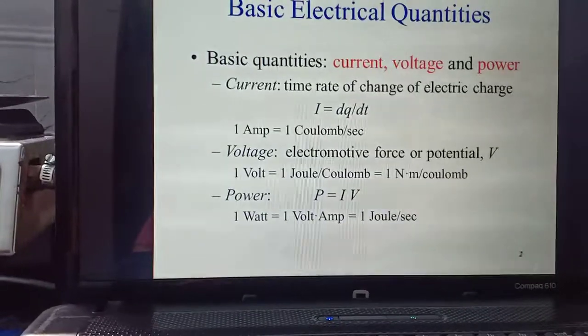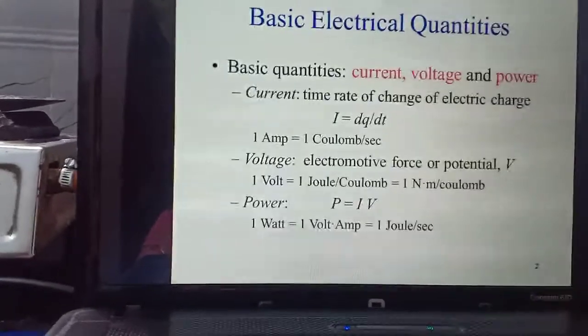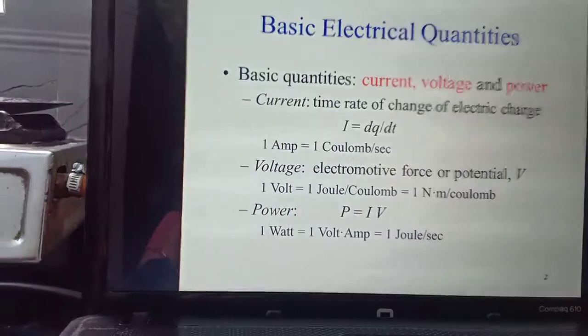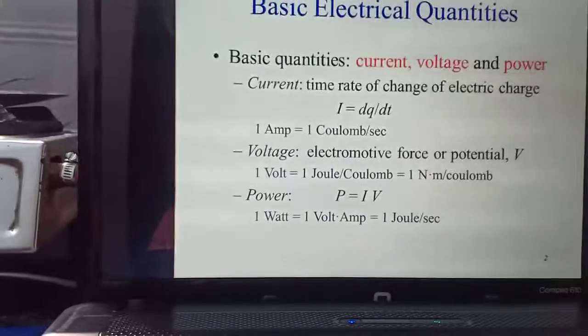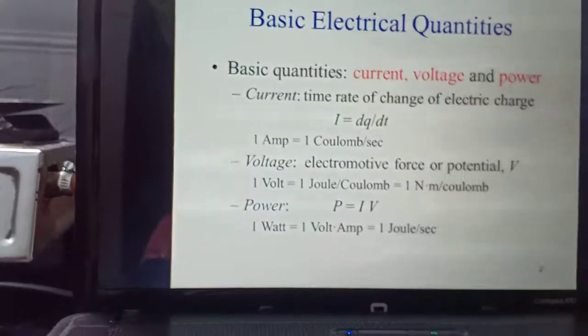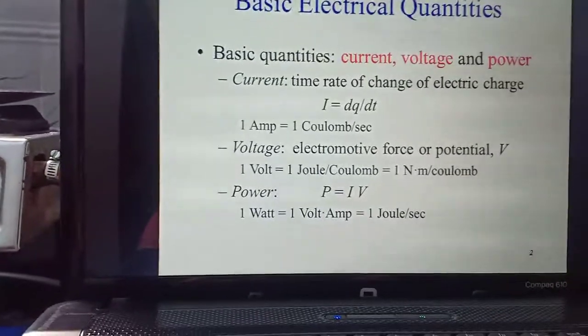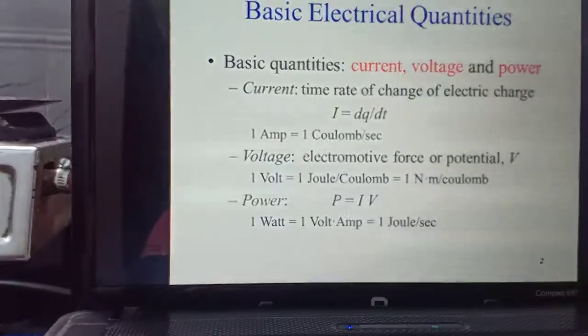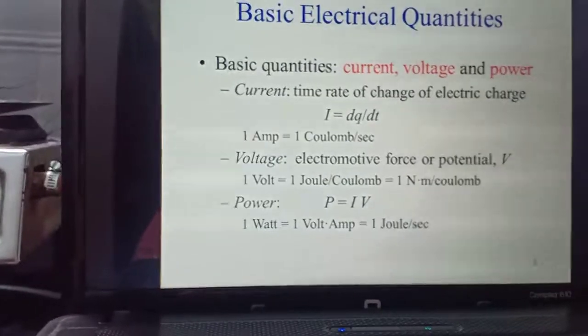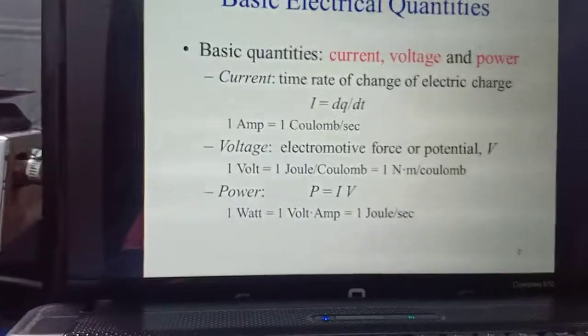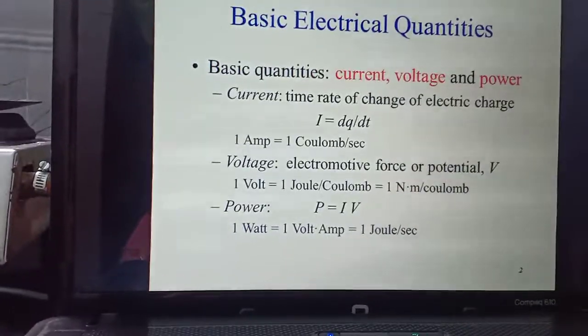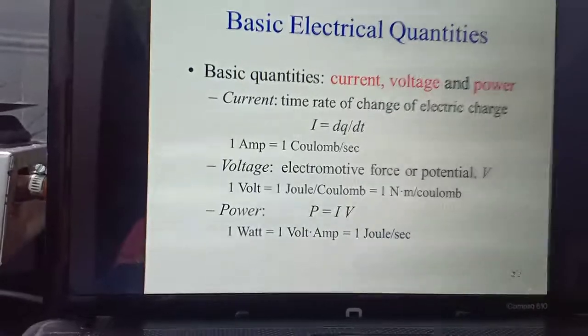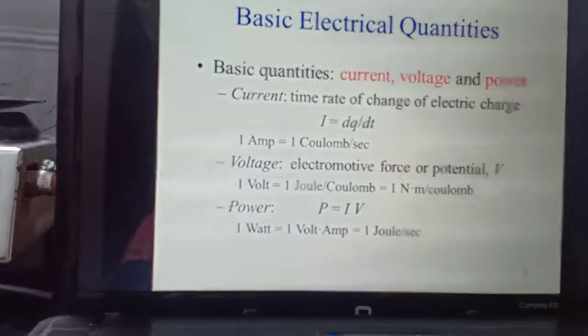Next is voltage. Voltage is electromotive force or potential. So it can be defined as the capacity of a charged body to do work. So work done in moving a unit charge from one place to another is electric potential or voltage. Work done is measured in joules and charge. So per unit coulombs. So voltage units: one volt can be written as one joule of work done for moving one coulomb of charge. So joule per coulomb, or work done is also measured in newton meters. So one newton meter per coulomb is the unit of voltage.